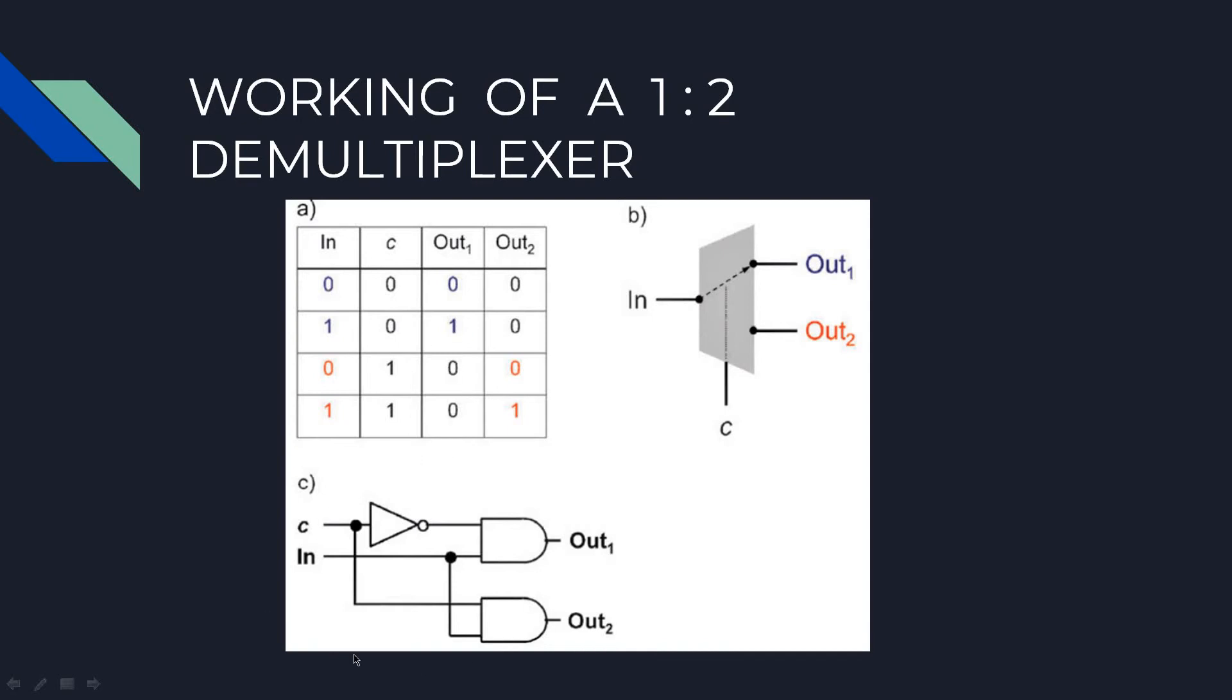This is the circuit diagram of a 1 to 2 demultiplexer, where you have two outputs and one input. You can see the input here and the two outputs here.